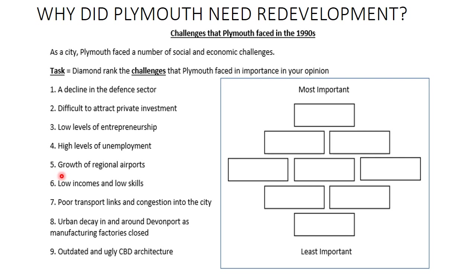Slightly separate is number five: growth of regional airports. In the mid-90s, airports like Newquay and Exeter began offering more flights, so people from Cornwall — your 500,000 residents — would actually fly to London to shop rather than go to Plymouth, further decreasing the city's income. Number six, low incomes and low skills, again links to people being out of work. Number seven, poor transport links and congestion into the city. The transport links were essentially unchanged from the 1960s, and increased car ownership meant the city became very congested, so people didn't travel to Plymouth to shop.